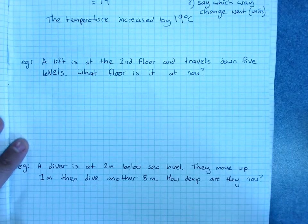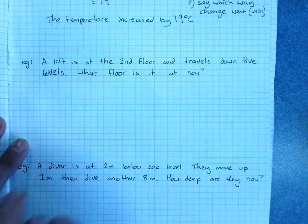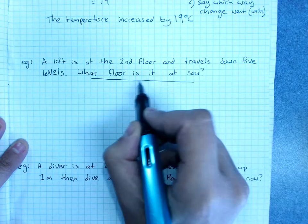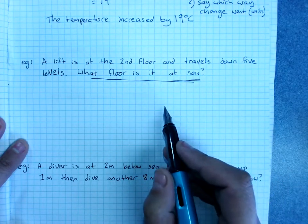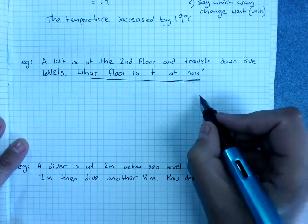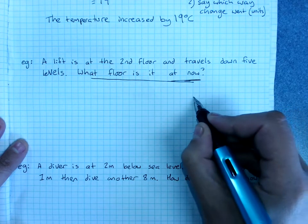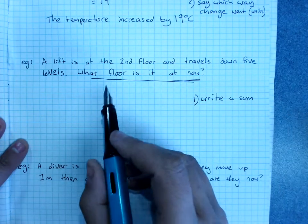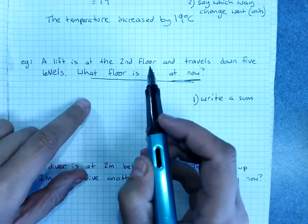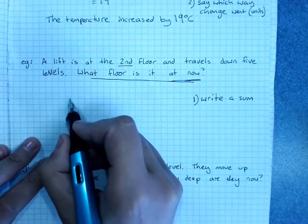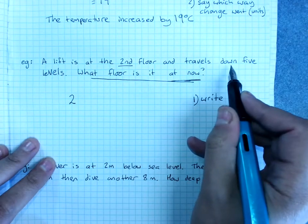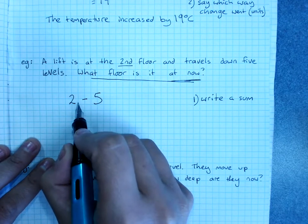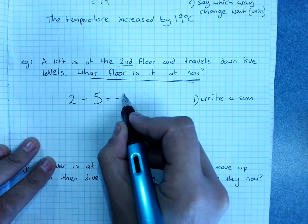A lift is at the second floor and it travels down five levels. What floor is it on now? Now this isn't a change question. This is what did we end up at. What floor is it at now? For these you'll just write a sum based on where it started. Now the levels is a bit weird because, let's write this, it's at the second floor. That's floor two. It travels down five levels. So this is to take away five equals negative three.